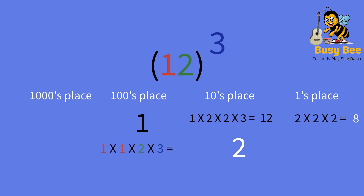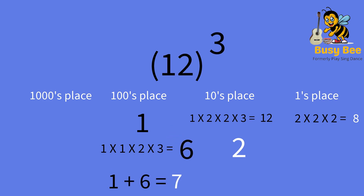Now, we take the tens place number, multiply it again with the tens place number, multiply it by the ones place number, and then multiply it by three. The answer is 6. Since we already have the 1 in the hundreds place, we add the 1 and the 6, which is 7. That is our hundreds place answer.